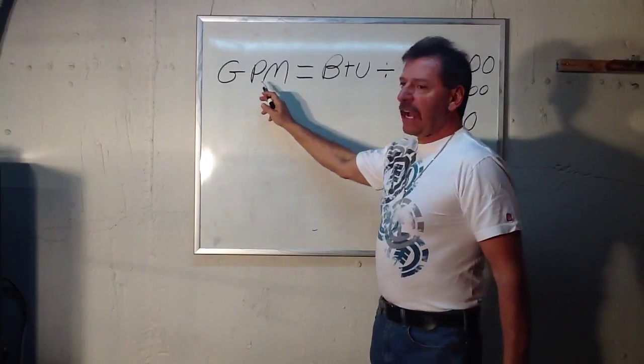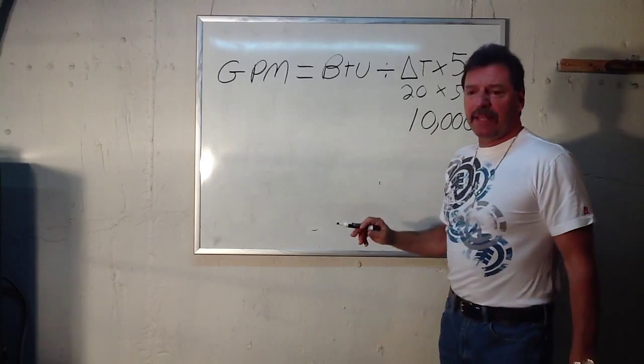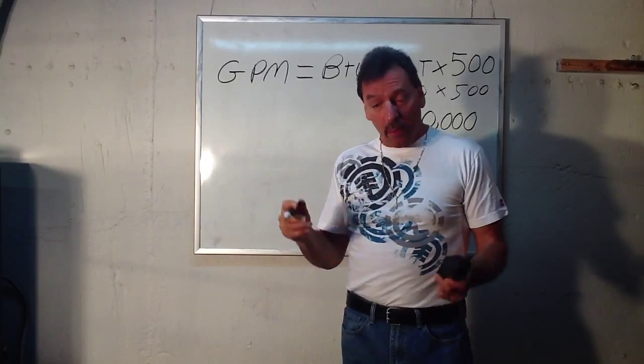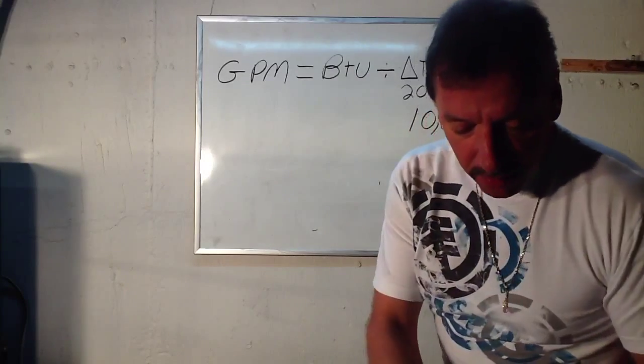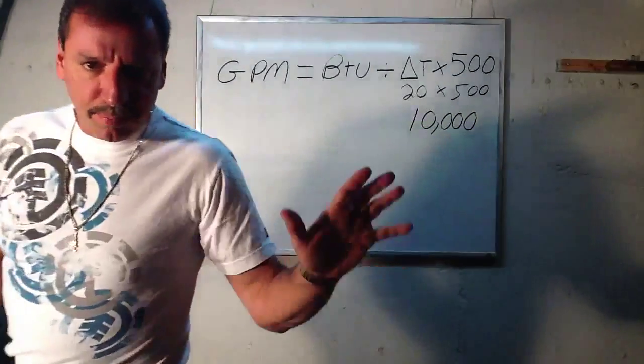So, now, to find out the gallons per minute, what you need to know is BTU divided by 10,000. What's the BTU? Well, we don't know that, but we're going to find out pretty easily. And I'm going to put that up there next. Bear with me. Part 2.